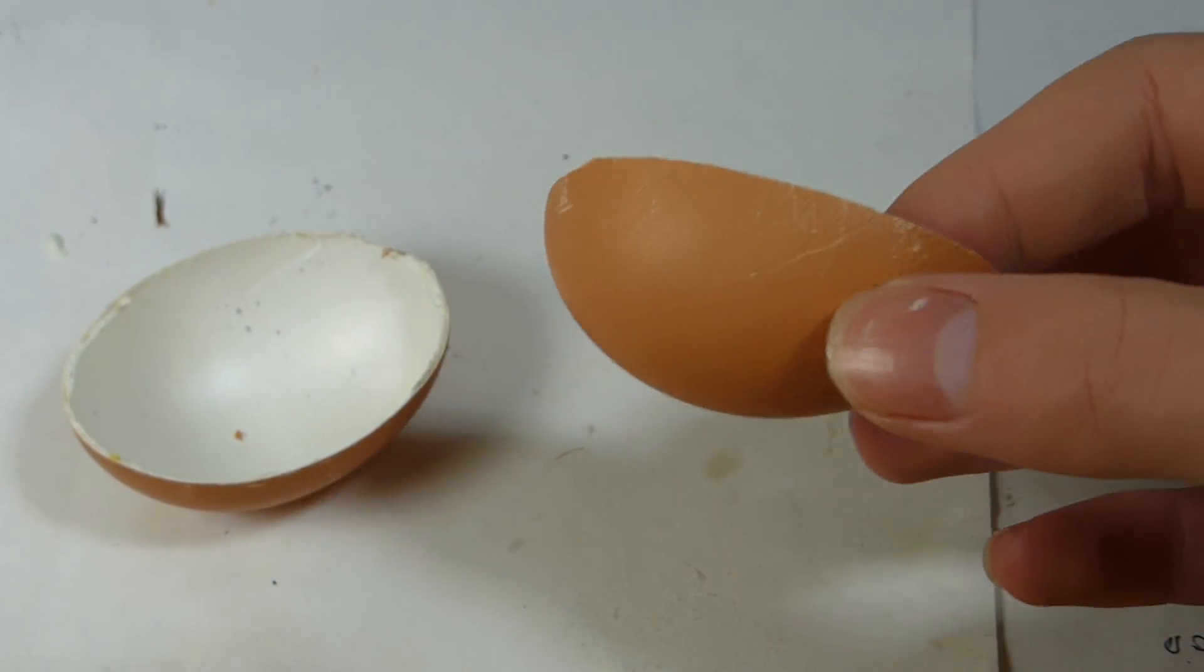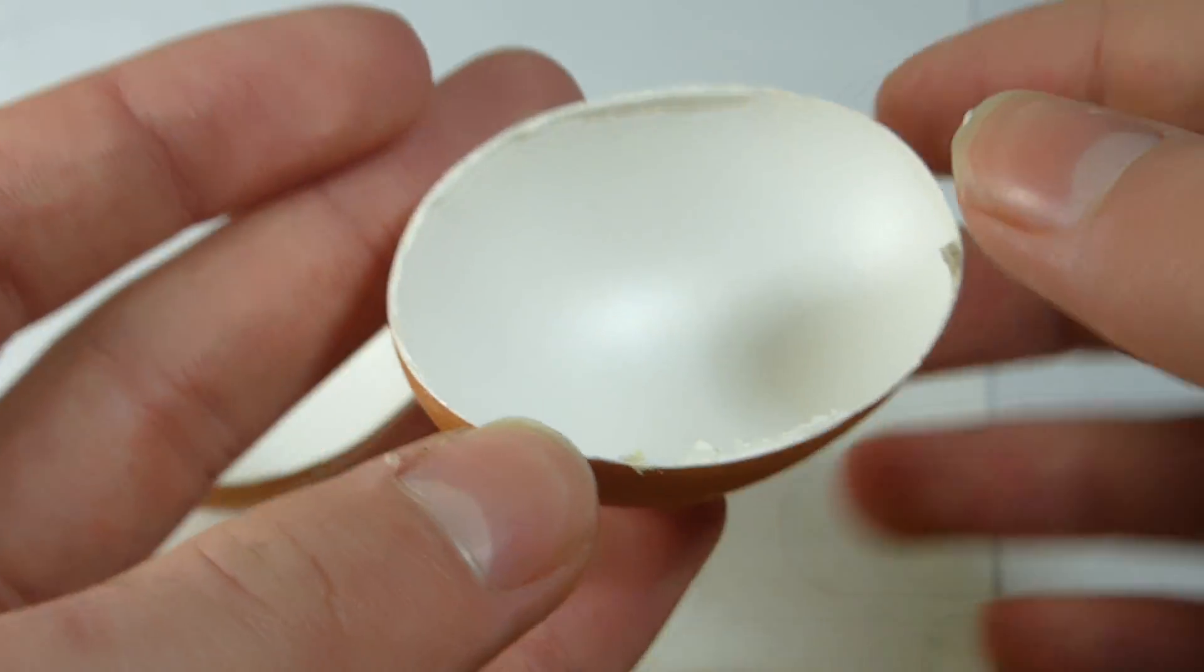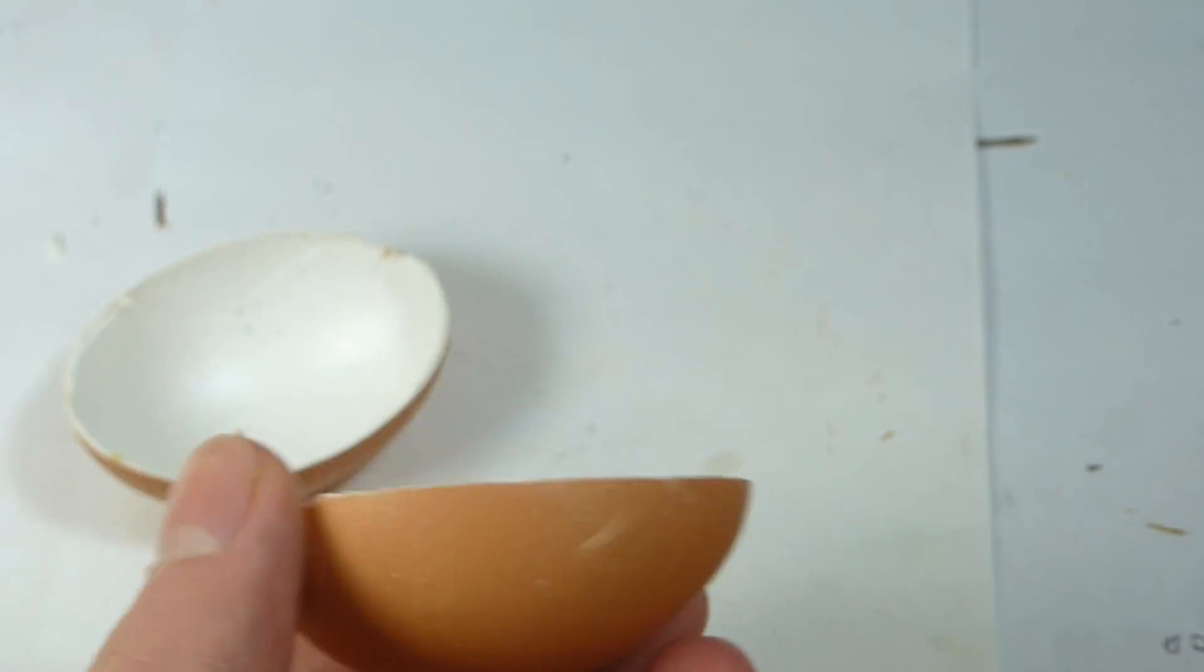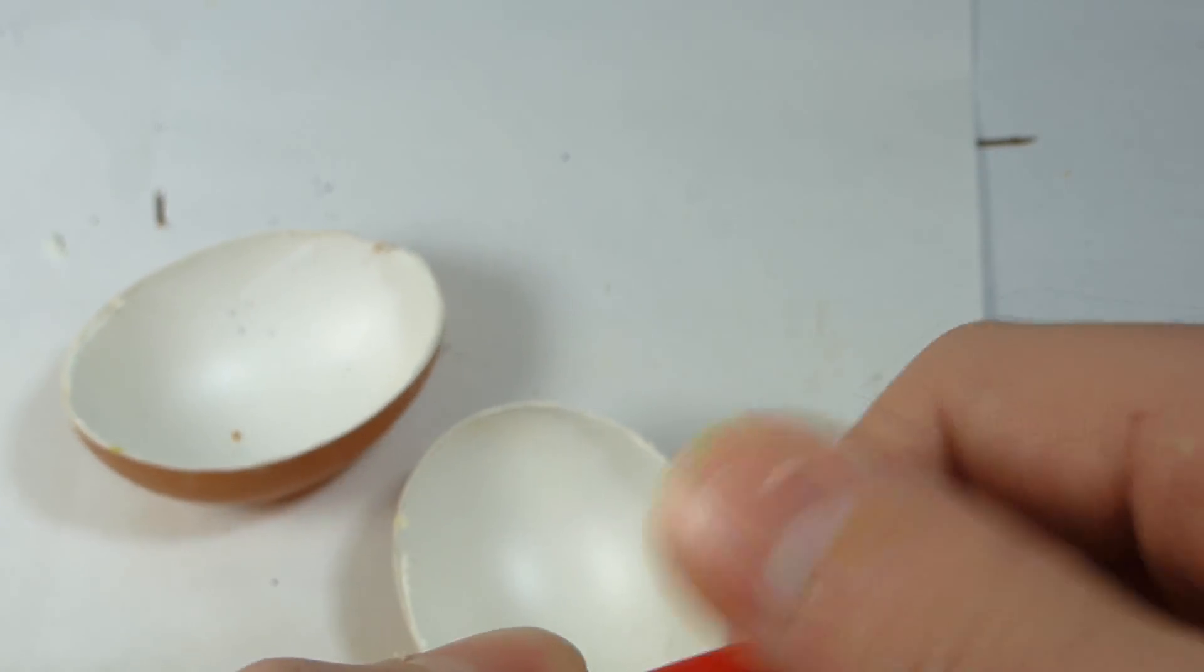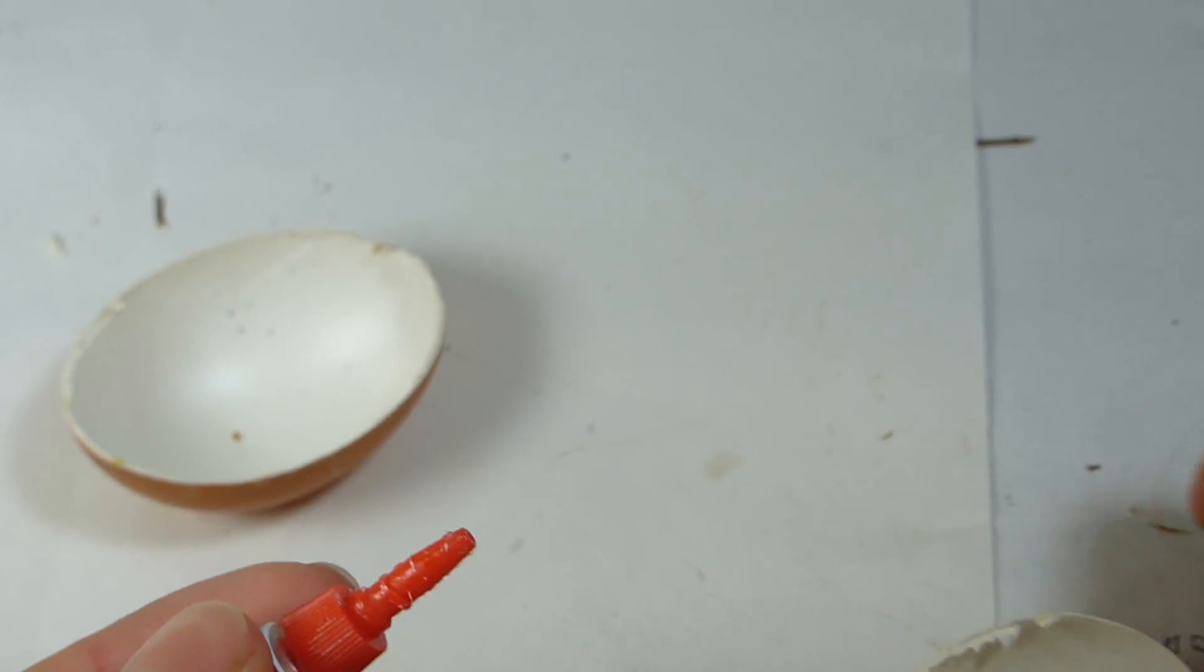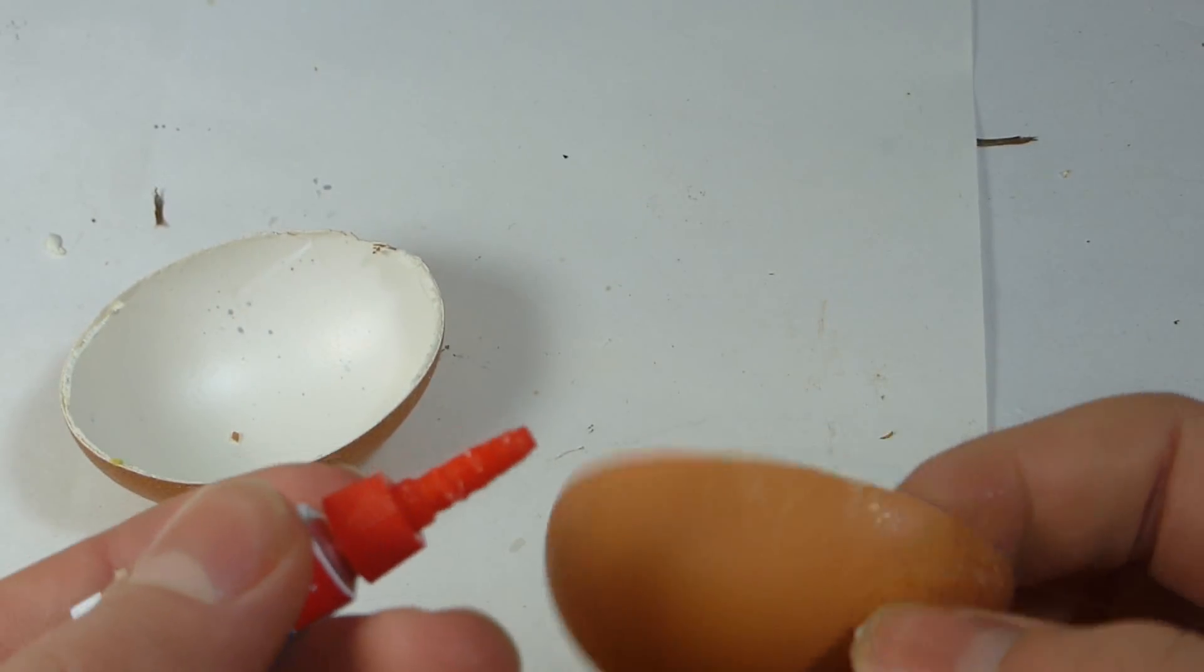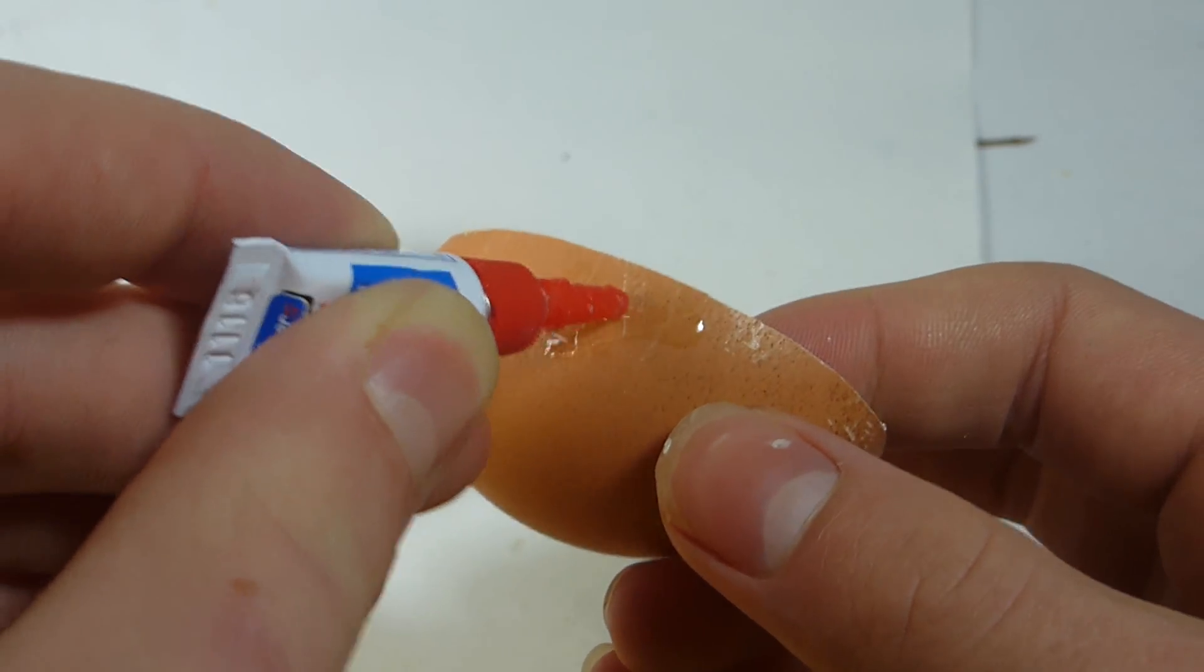So the first thing I'm going to show you now is how to repair a cracked egg like this. So like I said, as long as it's still all hanging on and not falling off, you're good. So you're going to take some liquid super glue, and then you're going to take your broken side of the egg and just smear some super glue along those lines.